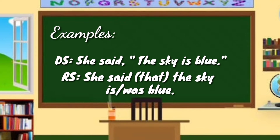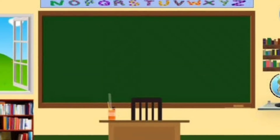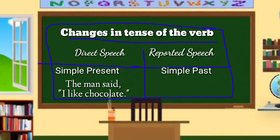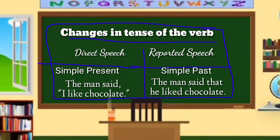Changes in tense of the verb: direct speech uses simple present, while reported speech uses simple past. For example — DS: The man said, 'I like chocolate.' RS: The man said that he liked chocolate. In direct speech, the verb 'like' is in its simple present tense, and it shifts to 'liked' in reported speech.